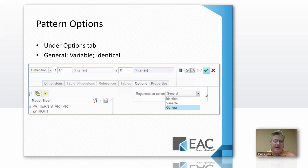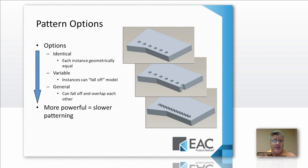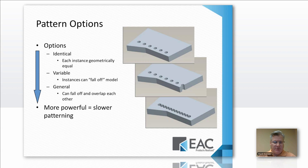You see the pattern option in the pattern dashboard. Under the options tab, you can see you've got general, variable, and identical. What do those mean? Pretty simple — the more power you put into a pattern, the slower it will be to regenerate. Identical will take each instance, make it geometrically equal, and create them that way. Variable gives a little more power — instances can, in a sense, fall off the model. General gives you the most power of all; the instances can bump into each other and can fall off the model.